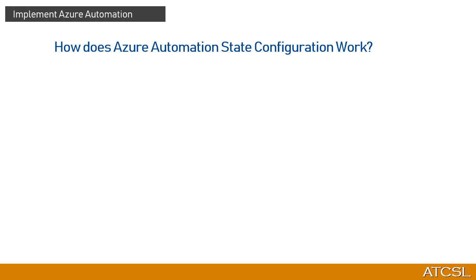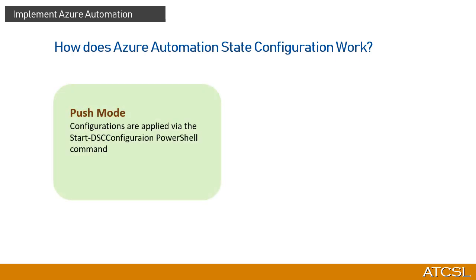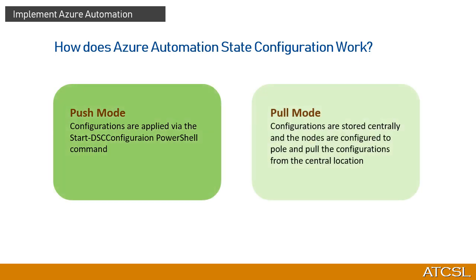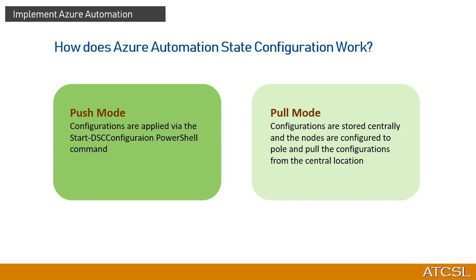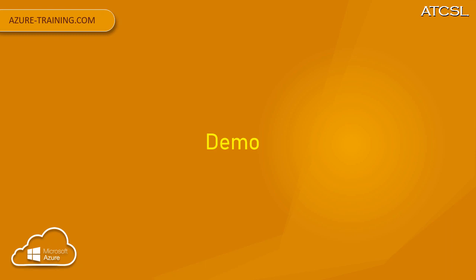There are two modes to stage DSC files for target nodes. The first is push mode, where configurations are applied to the node via the Start-DscConfiguration command. The second is pull mode, where configurations are stored centrally on a DSC service running on Windows Server 2012 R2 and above. Target nodes pull the configuration using their unique GUIDs from the server running the DSC service. PowerShell DSC in Azure is very powerful — it can be used during VM provisioning using the VM extension, which is what we will use in our demo.